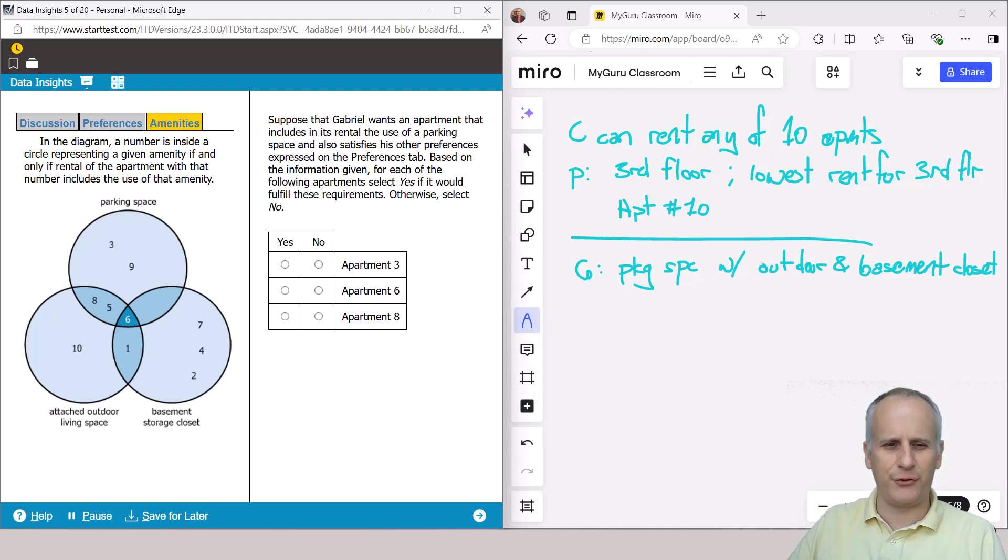So we need basement storage closet, we need a parking space and outdoor living. So we've got to make sure if it fulfills all three of those requirements. Well, apartment three just has the parking space, so that's a no. Apartment six, well, it's got a parking space, it's got an outdoor living space, and it's got a storage closet. So that's a yes. And then apartment eight is only living space and parking space. So that's a no. And you can see how quickly these can go if you do the work up front and are efficient.